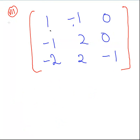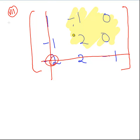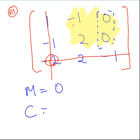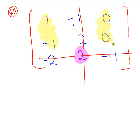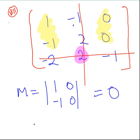Moving on to the bottom row. We are at the minus 2 element. The submatrix of what is left has a column of all zeros, so we know automatically the minor is going to be zero. The cofactor is also going to be zero because it's plus 1 times zero. Next element: cross off the row, cross off the column. We're left with 1 and minus 1 in the first column, and 0 and 0 in the second column. The minor is the determinant of 1, minus 1, 0, 0 — that works out to zero. So the cofactor is also zero.